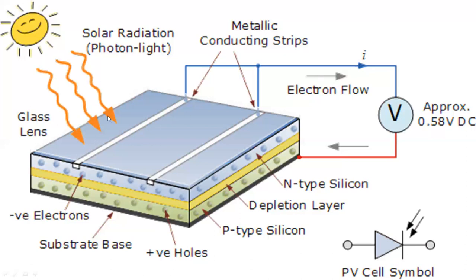Typically, as we see here in the diagram, this is a glass lens. We have negative electrons and positive holes. Holes are nothing but the gaps created when electrons move — the hole that is created is called a hole, which is positive because it is losing the electron. This is the P-substrate of the silicon, and this is the N-substrate. In between we have a depletion layer, and this is how the circuit is connected.